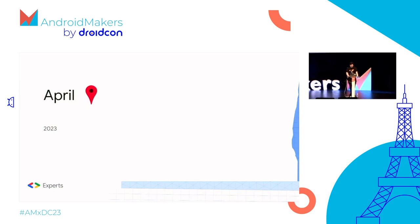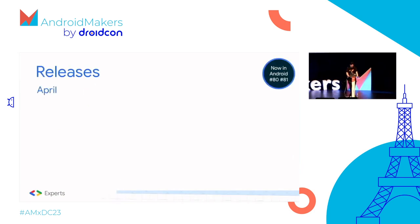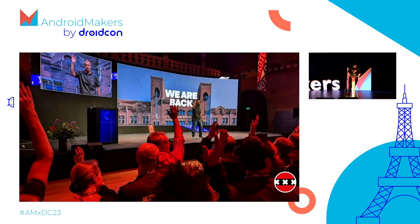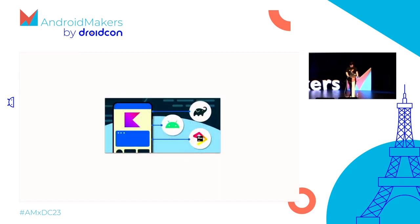Finally, April — you are here! Releases: Now in Android episodes 80 and 81, lots of AndroidX releases, Android 14 Beta, Android Gradle Plugin 8.0, Android Studio Flamingo Stable and Giraffe Beta — another stable release. KotlinConf just two weeks ago in Amsterdam — amazing conference, great T-shirts. We heard from KotlinConf that JetBrains, Google, and Gradle collaborated to make Kotlin DSL the default for Gradle build scripts.